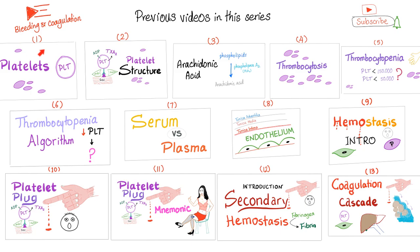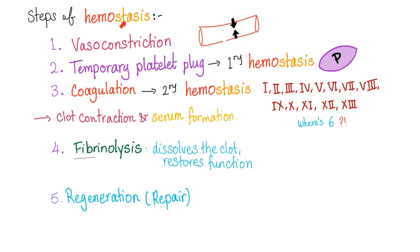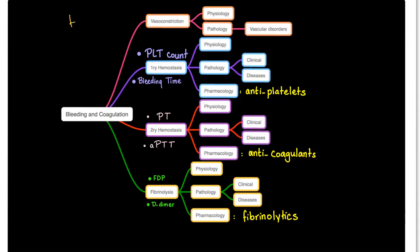This is a playlist on bleeding and coagulation disorders — please watch these videos in order. The problem in hemolytic uremic syndrome is in the temporary platelet plug, or primary hemostasis. Secondary hemostasis is normal. Since the problem with HUS is in primary hemostasis, platelet count will be low and bleeding time will be high. However, secondary hemostasis or coagulation is fine — PT is normal and PTT is also normal.